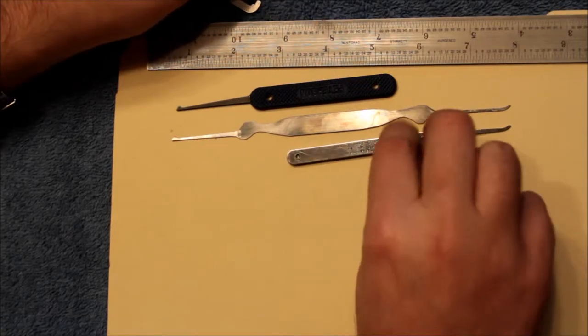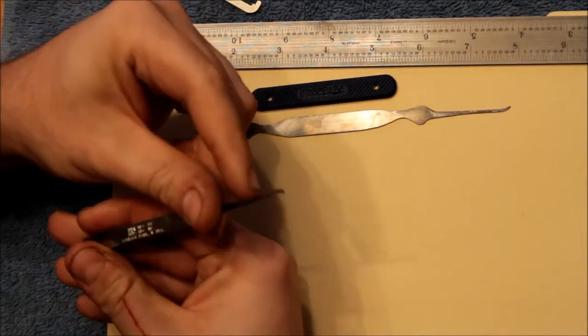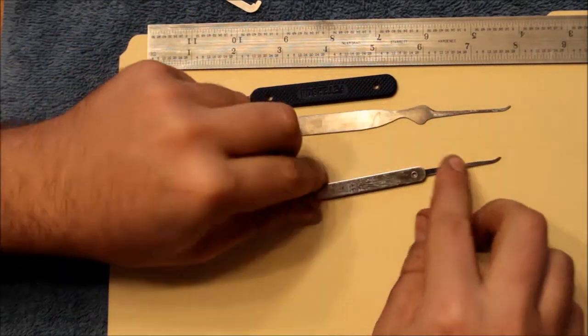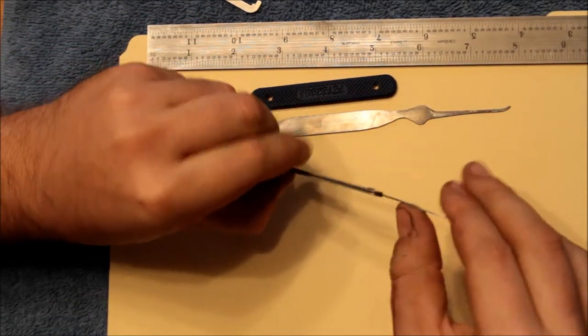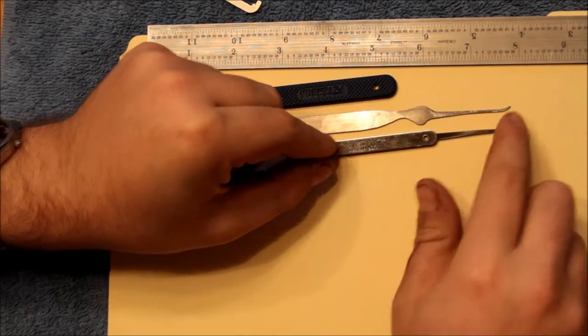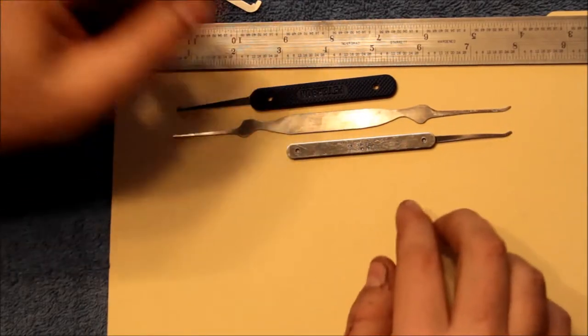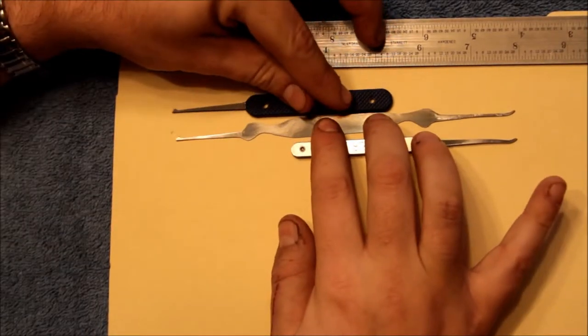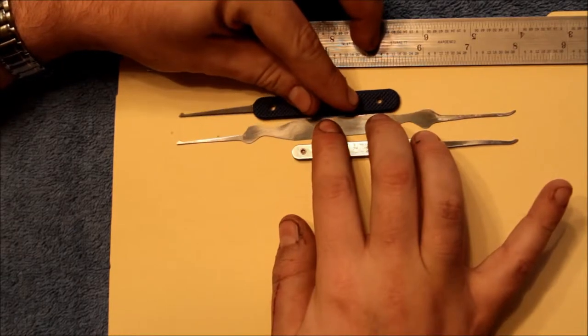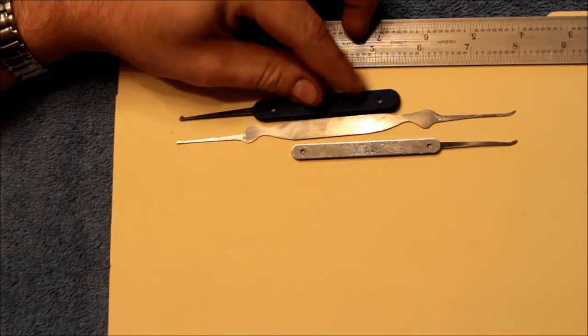This is an HPC pick. I don't remember where I got it. It does not have a model number on it, but it's an HPC pick, also carbon steel. You can see that it's very heavily used. So I was trying to duplicate that, and that's about a number two curve by the way I calculate those things. And then this is the Peterson small diamond, and I was trying to replicate that. I think I got it a little bit short.